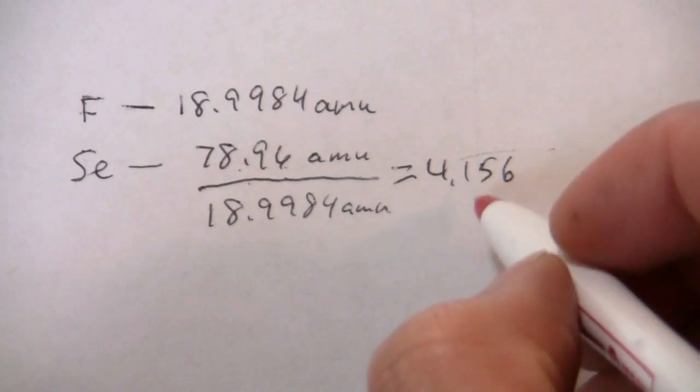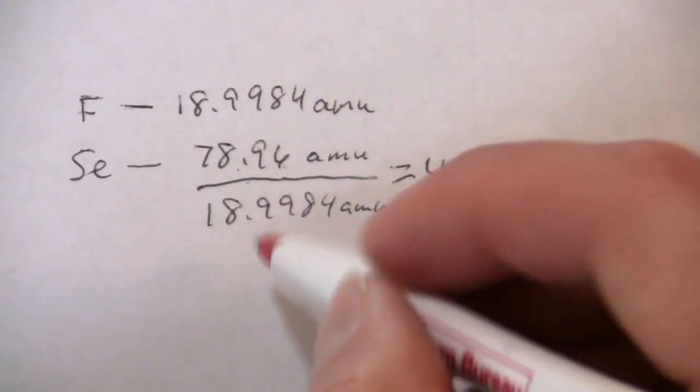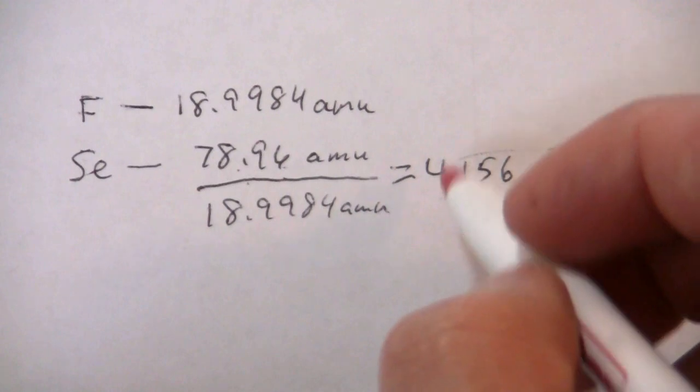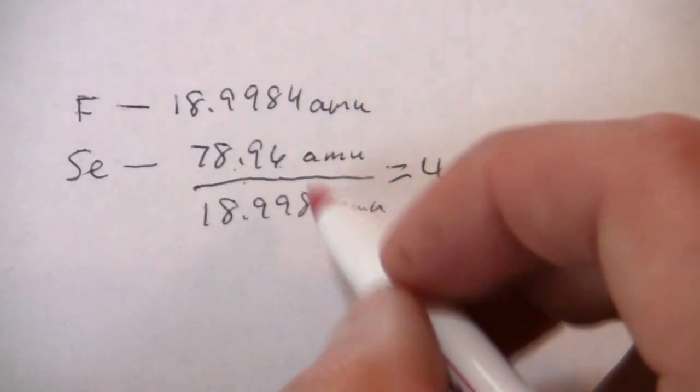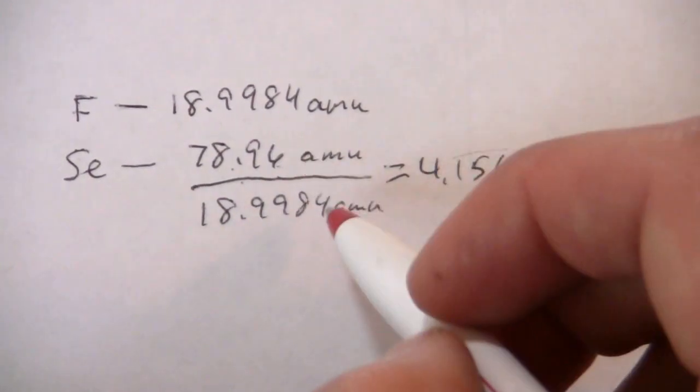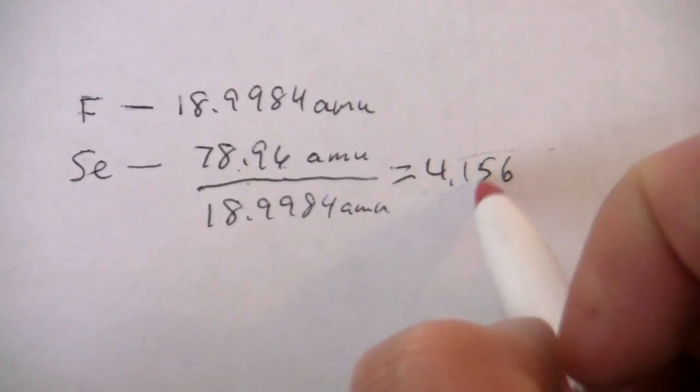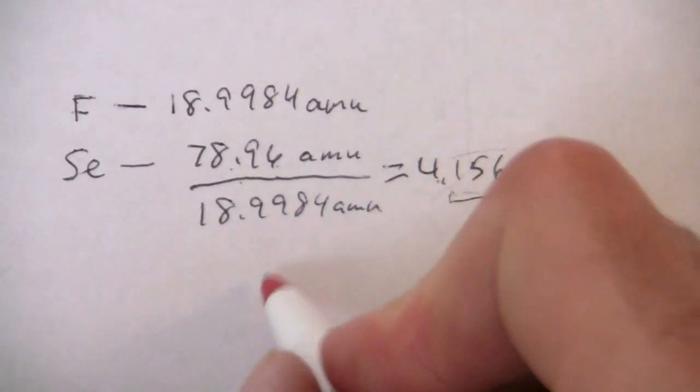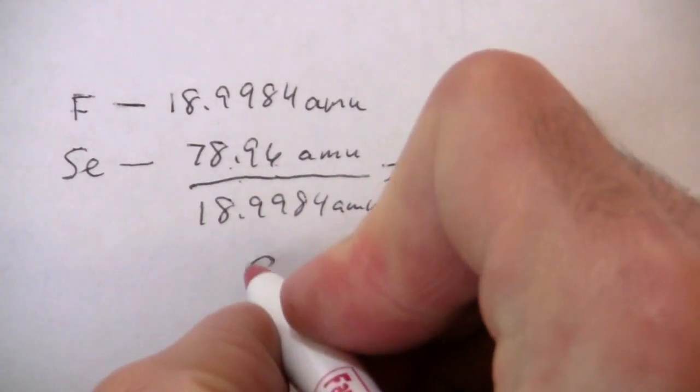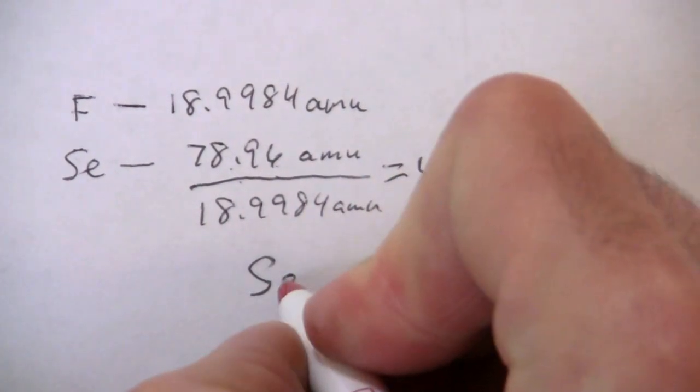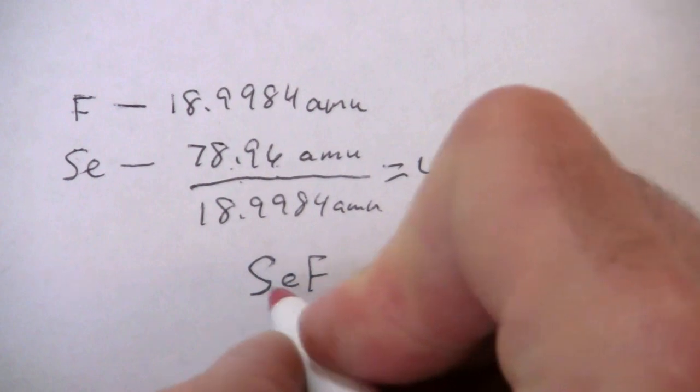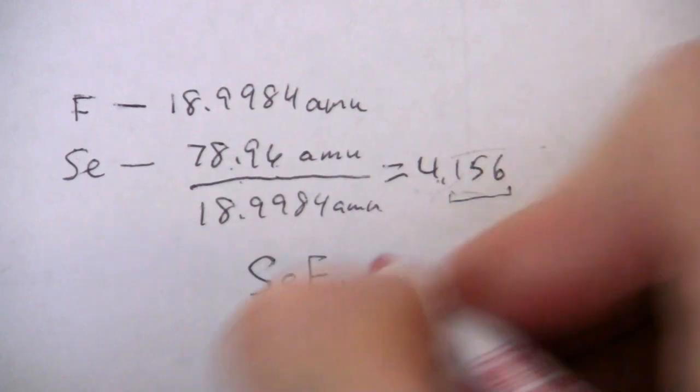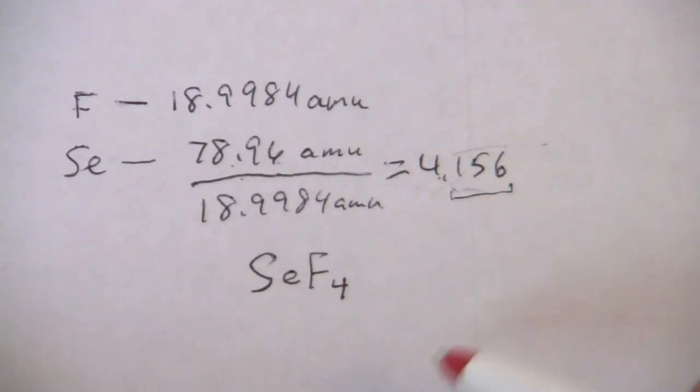So you see this is almost 4. It has to be a whole number, but it said they're almost equal masses, so this part is the almost part. And the formula for this compound would be selenium F4, or SeF4.